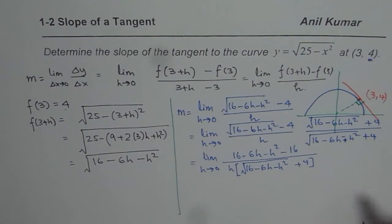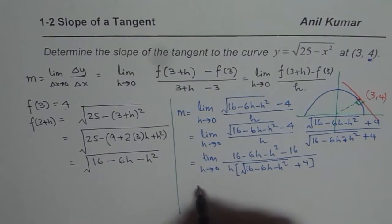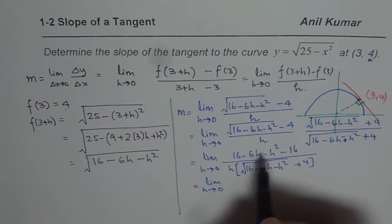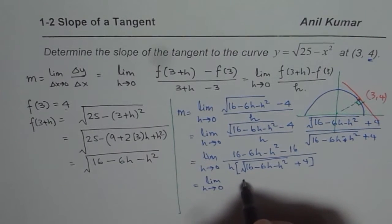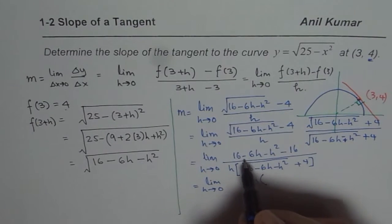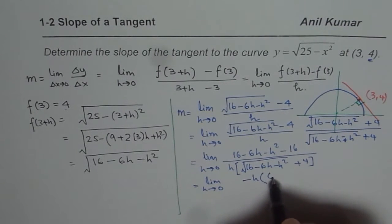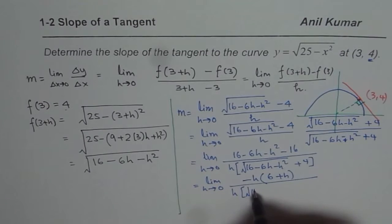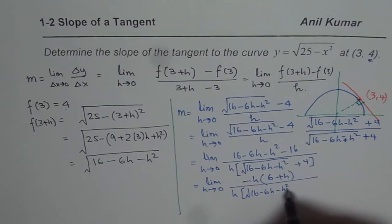Now 16 minus 16 is 0. So what we get here is limit h approaches 0. And we are left with minus 6h minus h square. So we can take minus h common. So we are left with 6 plus h in the numerator, and the denominator is h times square root of 16 minus 6h minus h square plus 4.